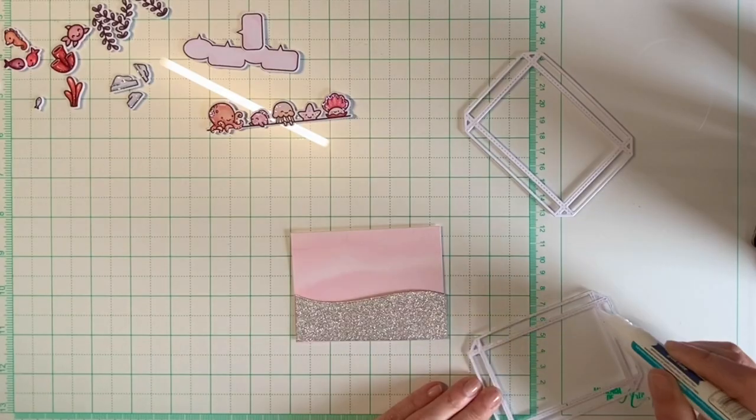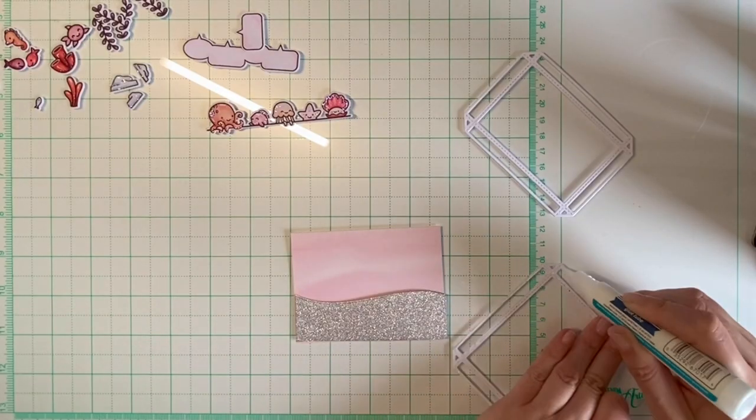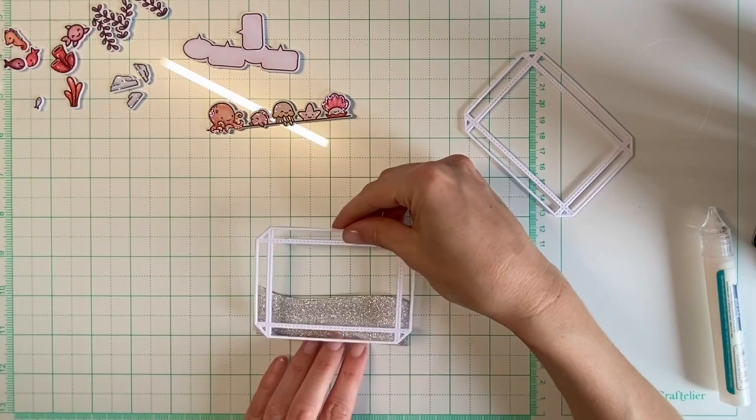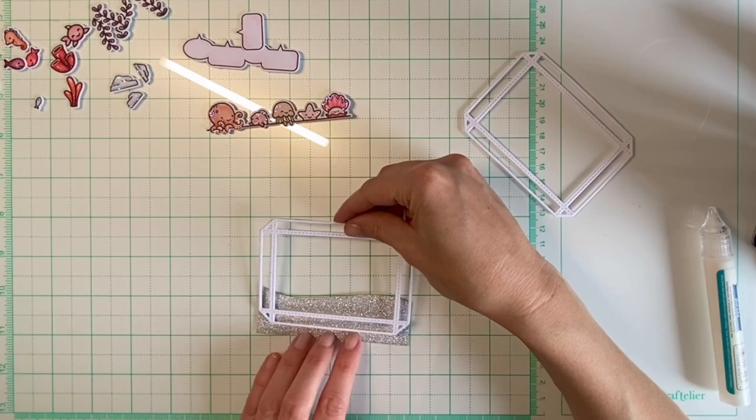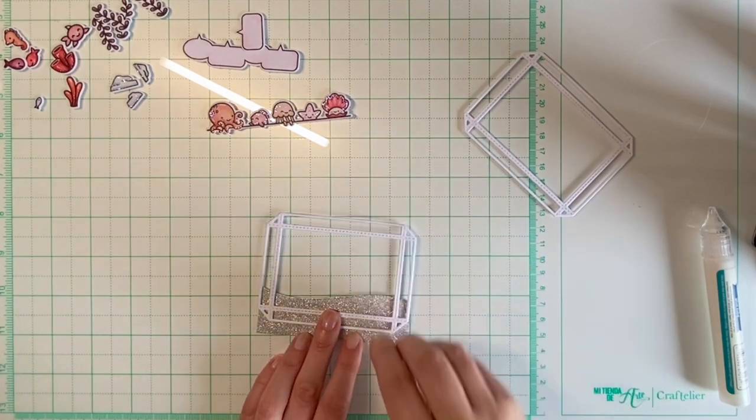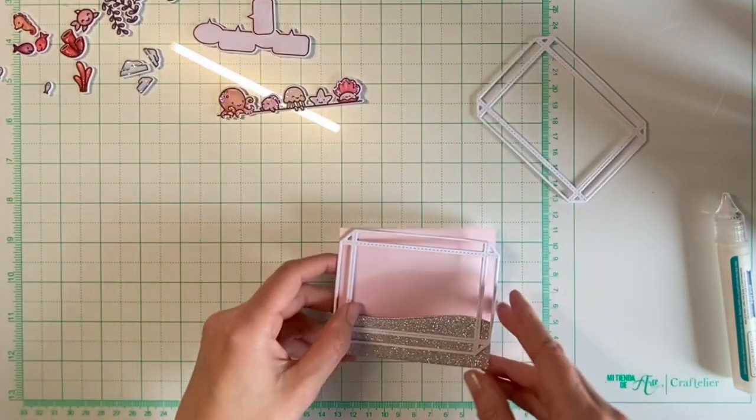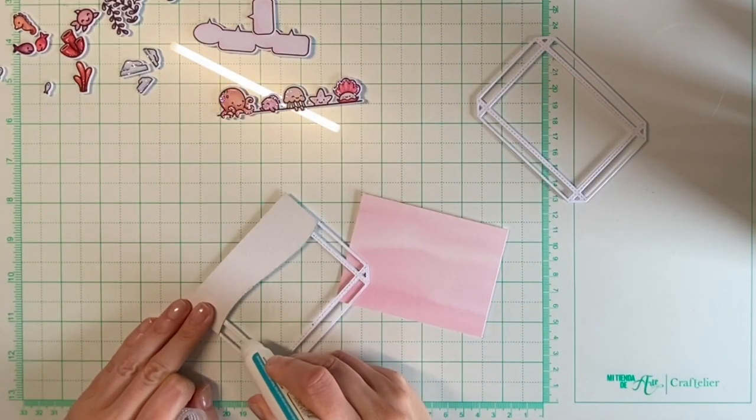After the glue dried, I can attach the sand piece behind one of the frame stacks, and after that's dry I can adhere my background piece for the aquarium.